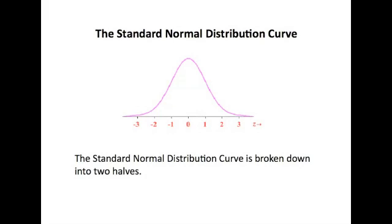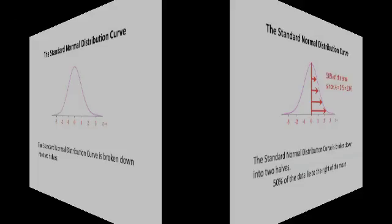And then you have one, two, and three, which out to the right indicates that those are three standard deviations to the right. And on the left, you have negative one, negative two, and negative three, indicating that those standard deviations are below the mean.